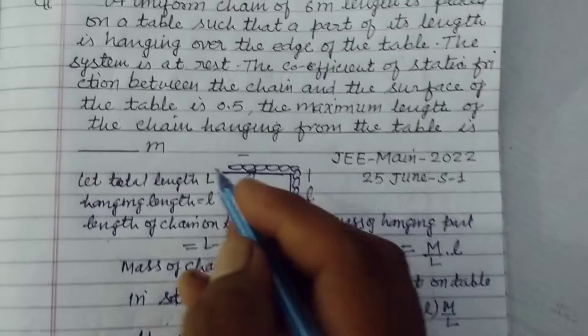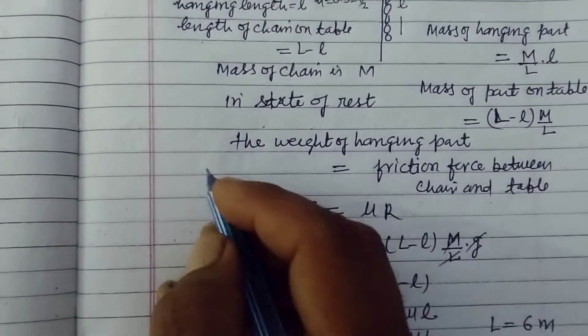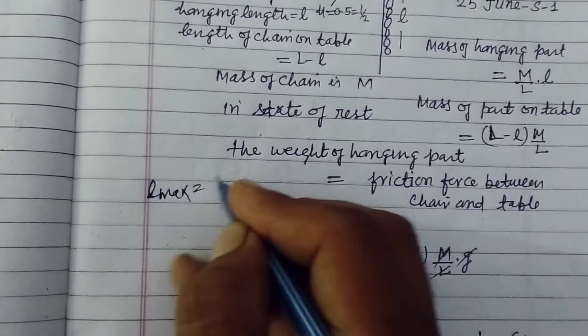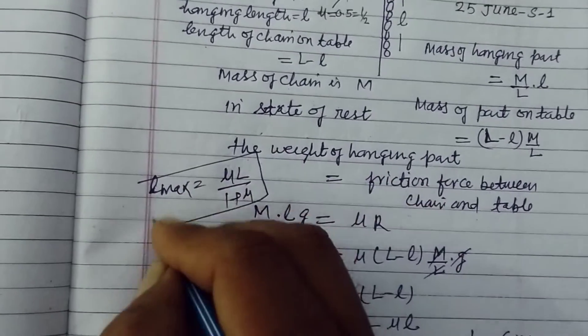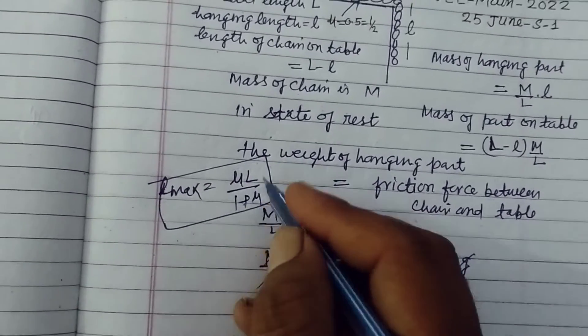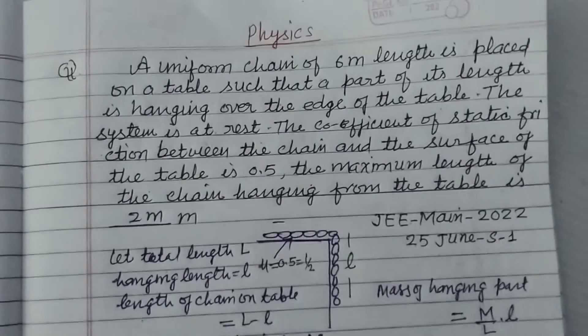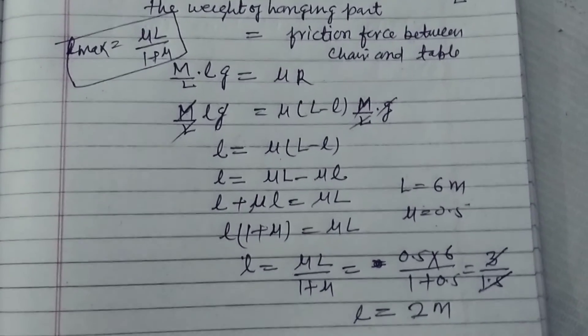So answer of this question is 2 meter. But in exam, you should learn this: that l maximum equal to mu L upon 1 plus mu, and putting the values of mu and L you can easily calculate this value. I hope you got it, please like the video, subscribe the channel, thanks for watching, thank you.